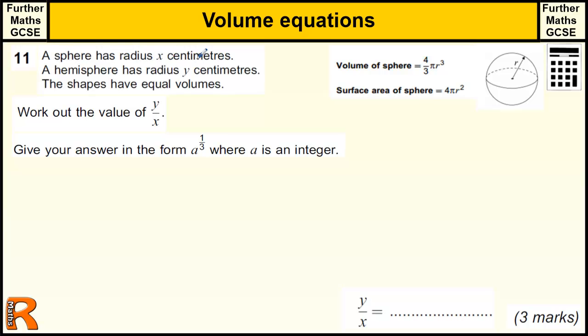The sphere of radius x centimeters. So the volume of a sphere is 4 thirds pi r cubed where r is the radius of the sphere. The hemisphere has a radius y centimeters. Well that's the same as a sphere except it's just half of that because a hemisphere is half a sphere.